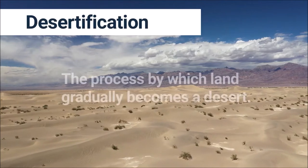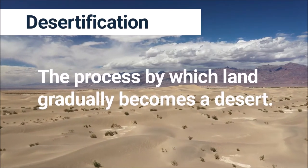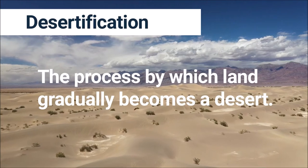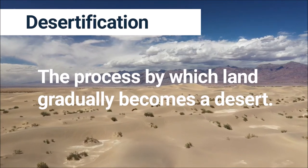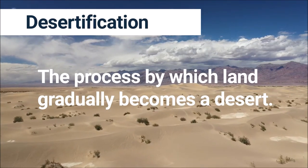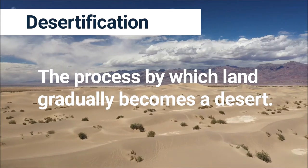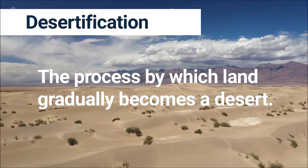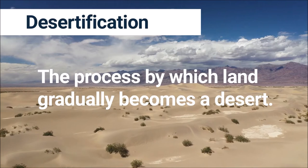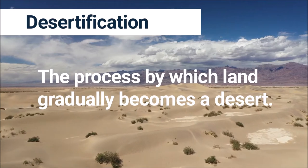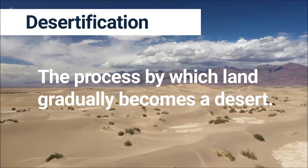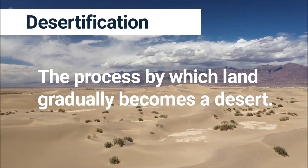Desertification is the process by which land gradually becomes a desert. Since overgrazing depletes vegetation cover, the soil will lose its moisture-retaining abilities. Overgrazed lands are directly exposed to the sun's heat, so they lose moisture at a faster rate. Desertification is harmful to the environment and also hinders biodiversity in habitats.